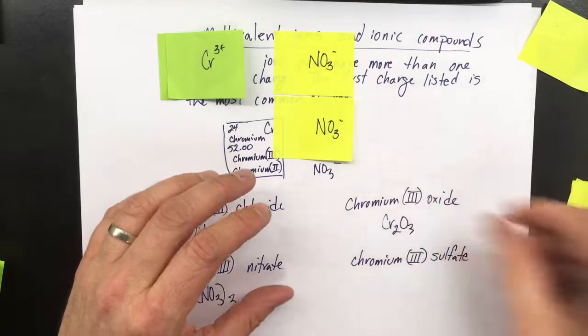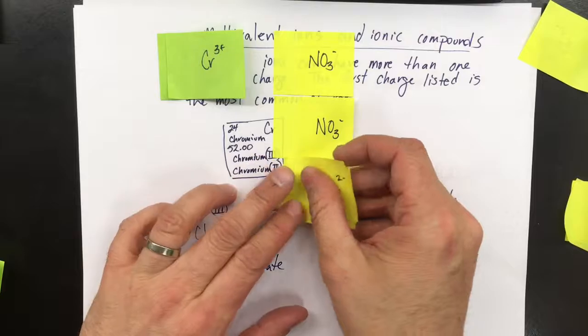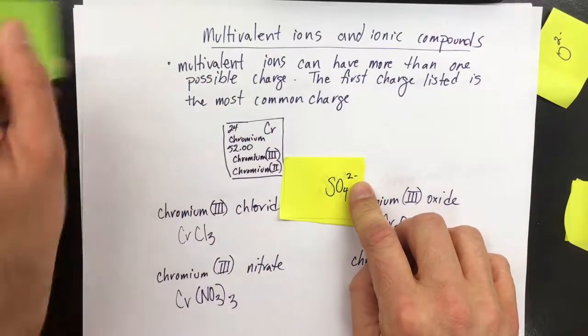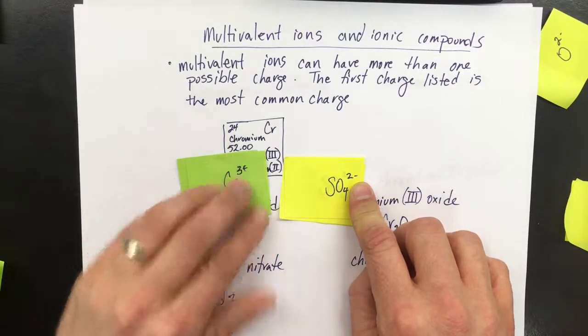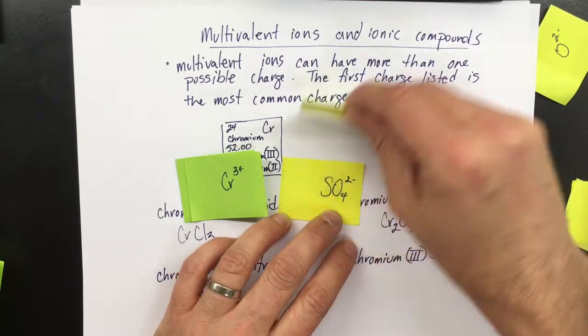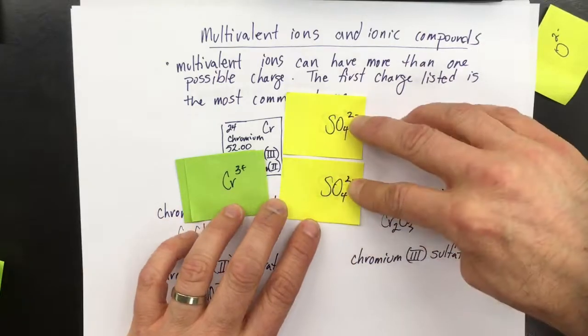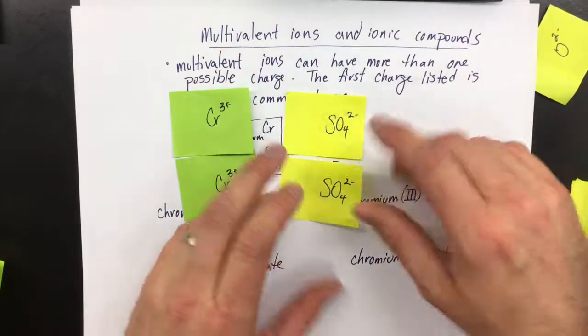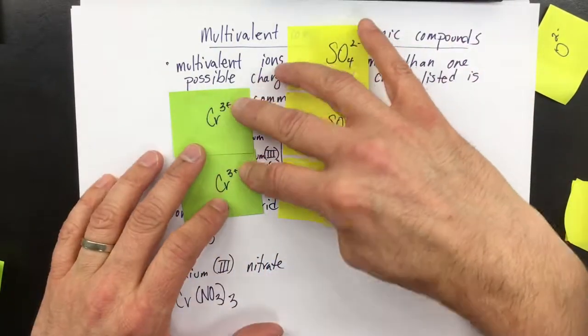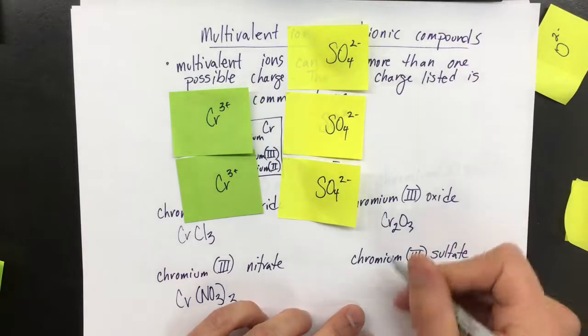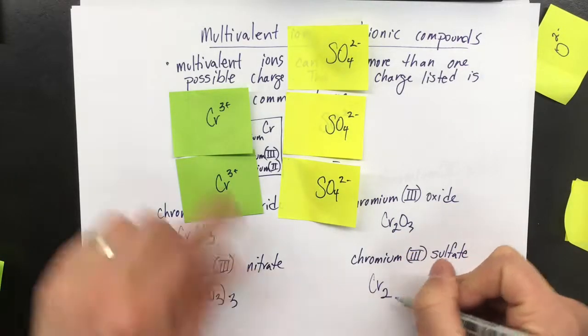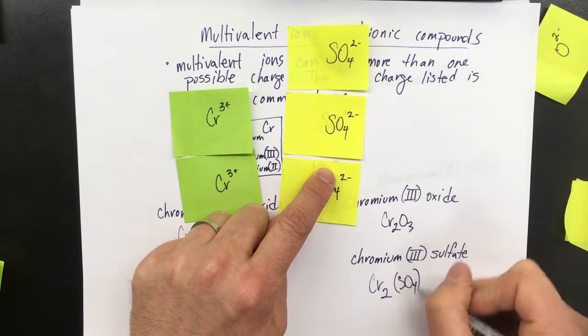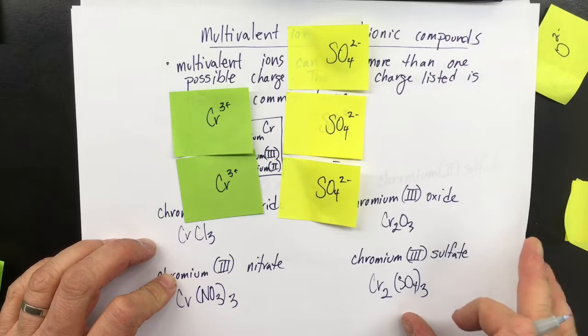Chromium(III) sulfate has a sulfate and the chromium. The sulfate has a 2- charge. The chromium(III) has a 3+ charge. So I need more sulfates. Now I've got 4- and 3+. Get another positive. I've got 6+ and 4-. And now I get 6+ and 6-. So this would be Cr - I have two chromium(III)s and I've got three sulfates. That's the correct formula for chromium(III) sulfate.